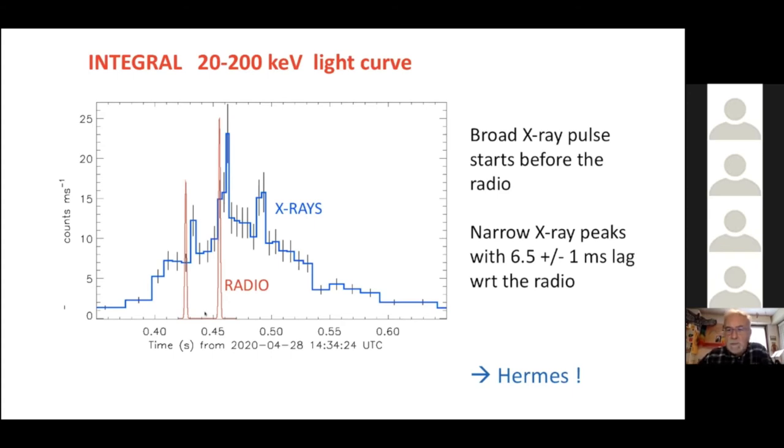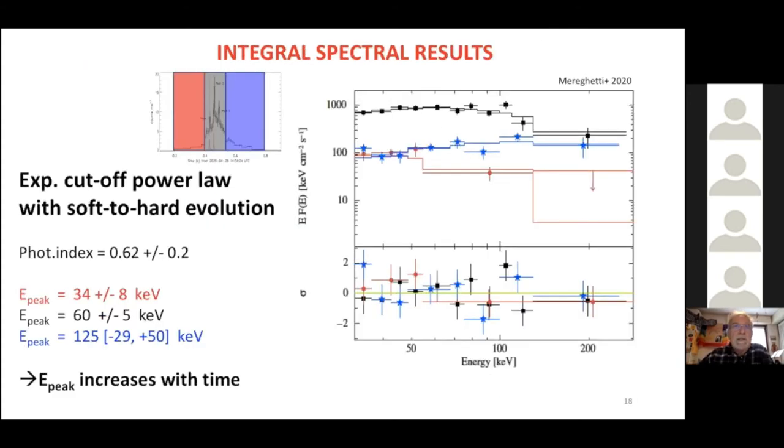Going now to the spectrum of these bursts. The spectrum was well described as it typically happens for a magnetar burst with an exponentially cutoff power law. What is interesting is that by making spectra as a function of time, we see evidence that the spectrum became harder as a function of time. The peak energy increased from about 30 to more than 100 keV.